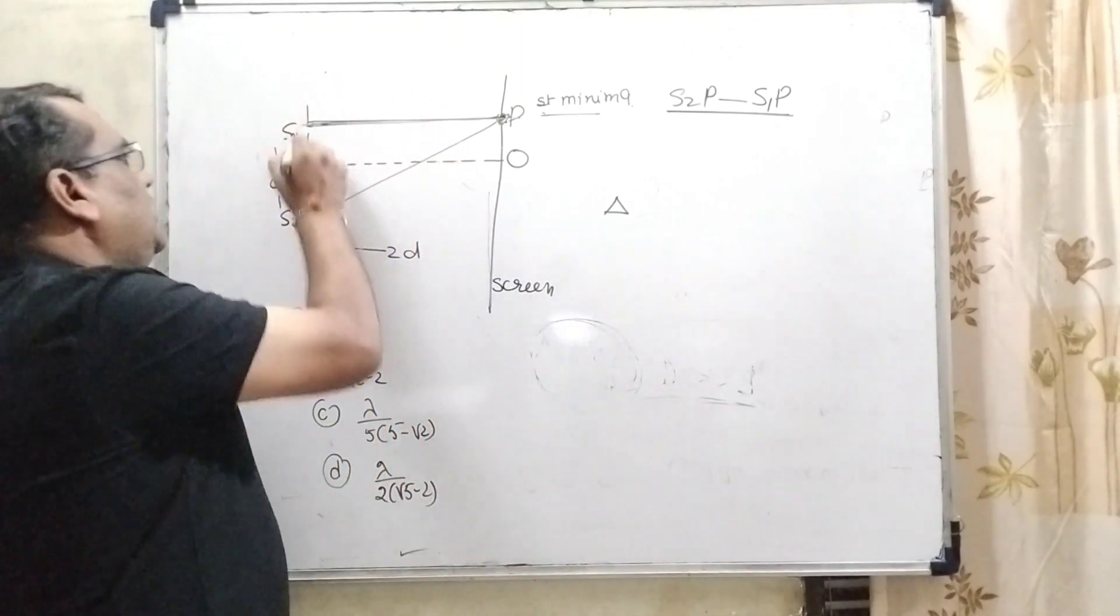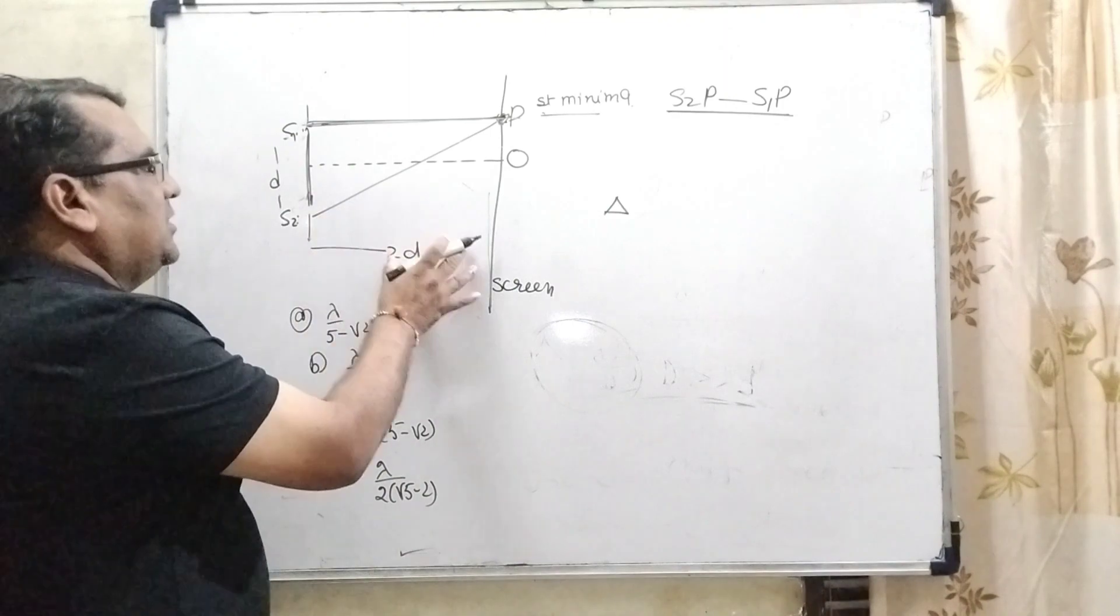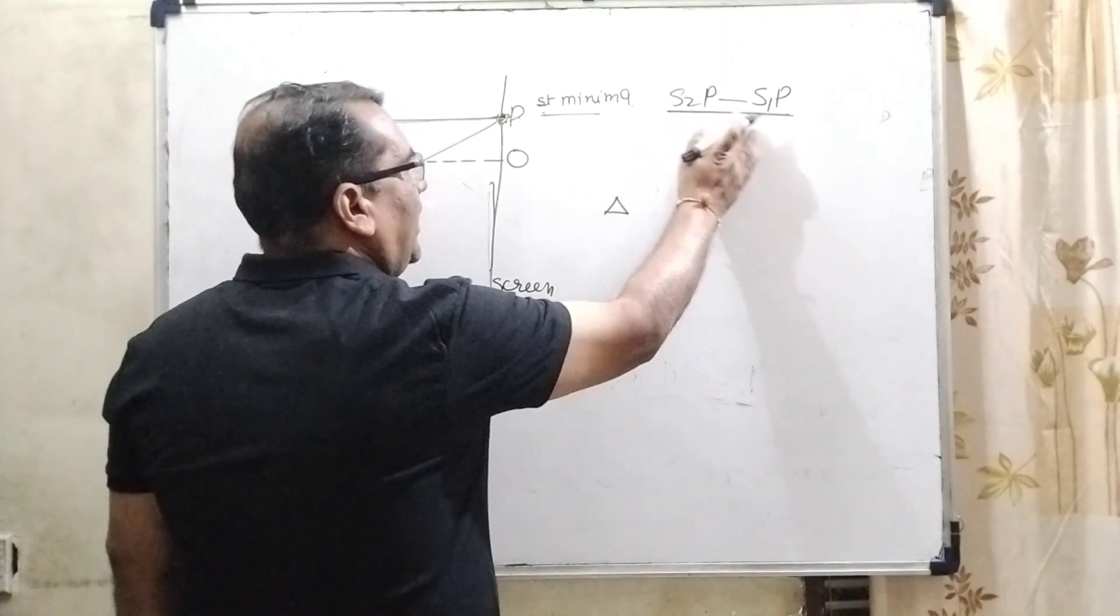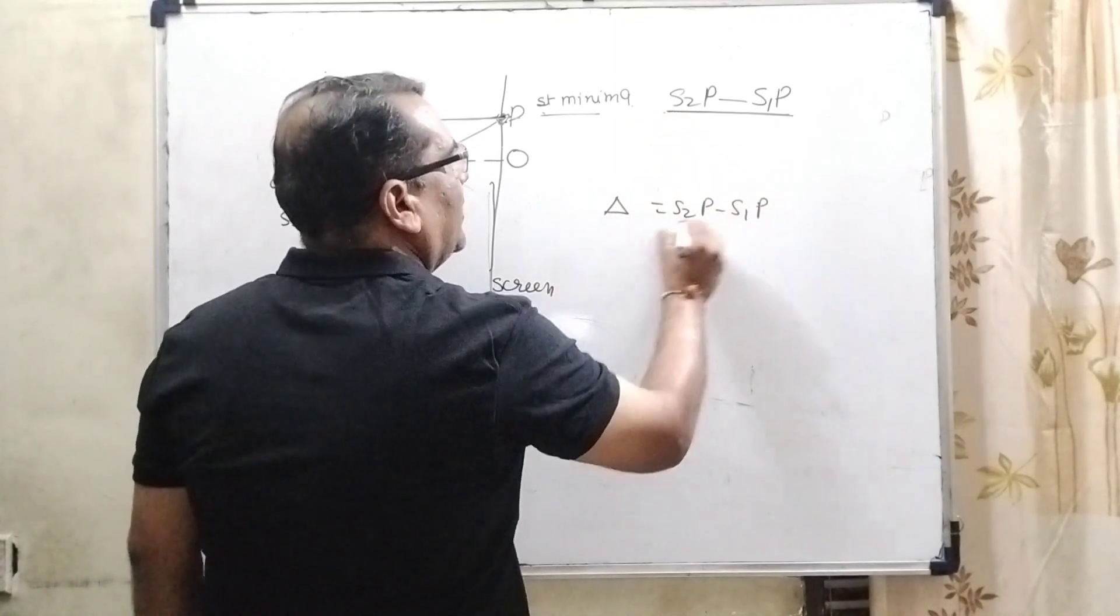Capital D is very large with respect to d. But in this question, we can see the distance between the two slits is d and the screen is only 2d, very close. Therefore, we are using path difference as S2p minus S1p.